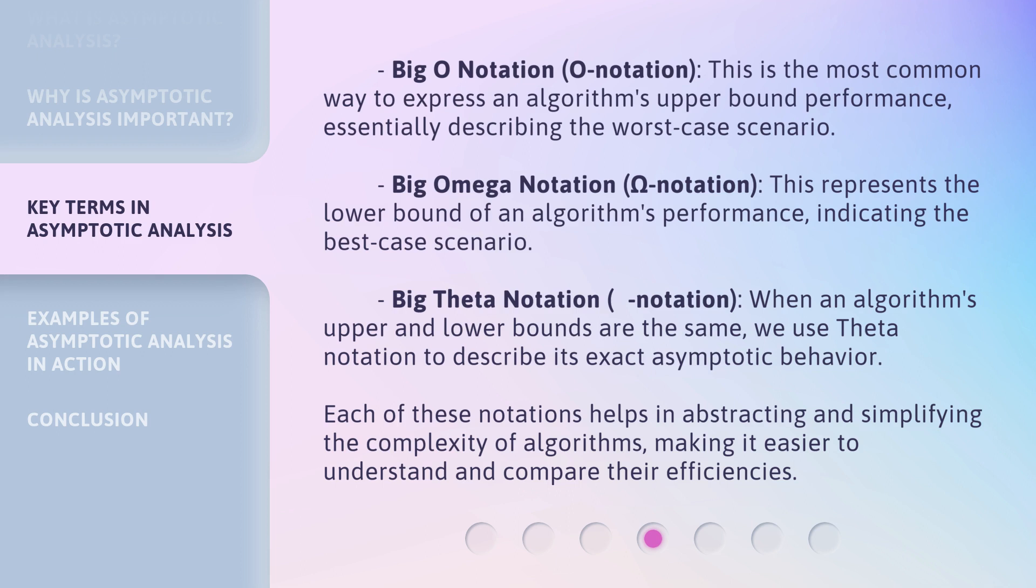Big Theta notation (Theta notation): When an algorithm's upper and lower bounds are the same, we use theta notation to describe its exact asymptotic behavior. Each of these notations helps in abstracting and simplifying the complexity of algorithms, making it easier to understand and compare their efficiencies.